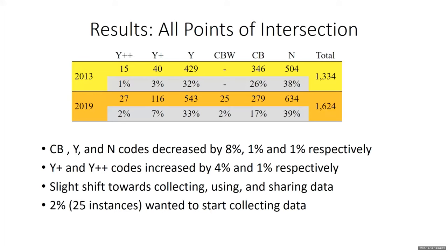Reviewing results across all points of intersection, the change between 2013 and 2019 shows that the CB, Y, and N codes had respective decreases of 8%, 1%, and 1%, whereas the Y-plus and Y-plus-plus codes had respective increases of 4% and 1%. These changes indicate a slight shift towards collecting, using, and sharing data. The 'could be / want to start collecting' code represented 2% of all codings — 25 instances where librarians wanted to start collecting data. The CBW and CB codes are combined for analysis since there were no CBW codes in 2013.